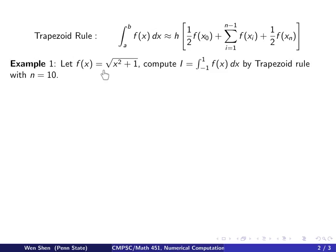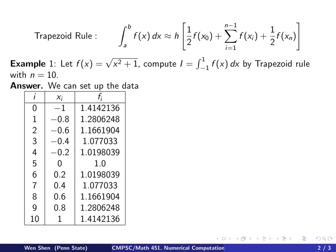Here's example number one. Given a function f(x) = √(x² + 1), we want to compute the integral of f from -1 to 1 by the trapezoid rule with n = 10. We need the function values evaluated at all grid points xi. For i from 0 to 10, xi ranges from -1 and increases by 0.2 all the way to 1, and we evaluate f(x) = √(x² + 1) at each point.